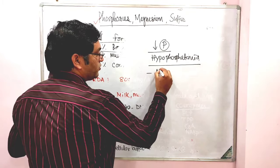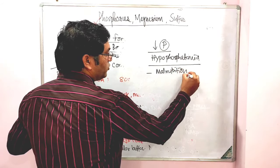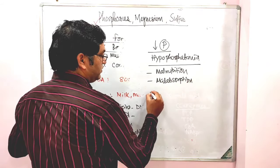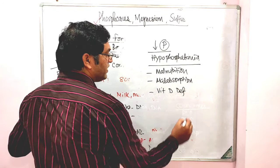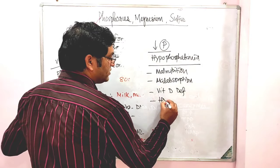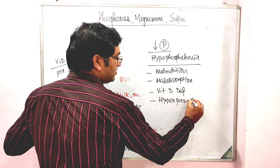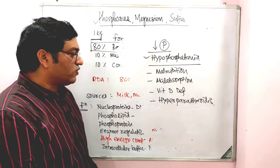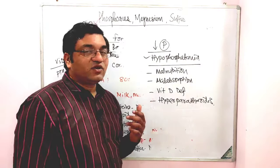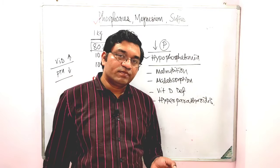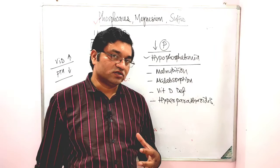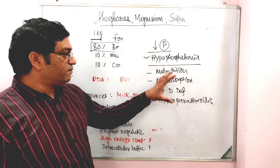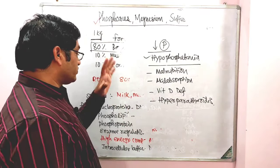In hyperparathyroidism, there is a decrease in the phosphate level. When there is an increase in the phosphate level, it is mainly found in hypoparathyroidism, Vitamin D toxicity, and cancer chemotherapy secondary to bone. In this condition there is an increase in phosphate level, which is known as hyperphosphatemia. These are the disease conditions related to phosphorus.